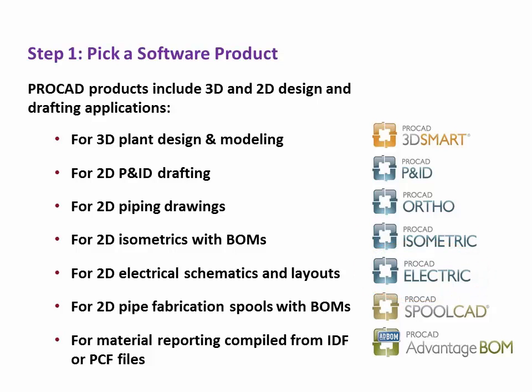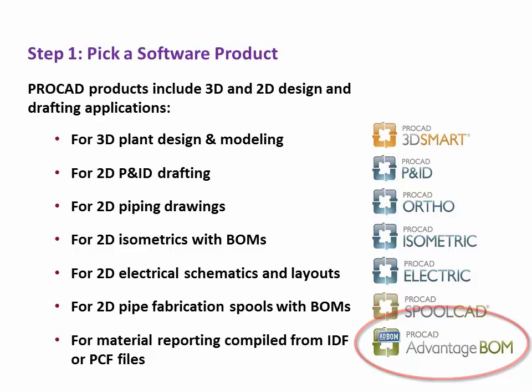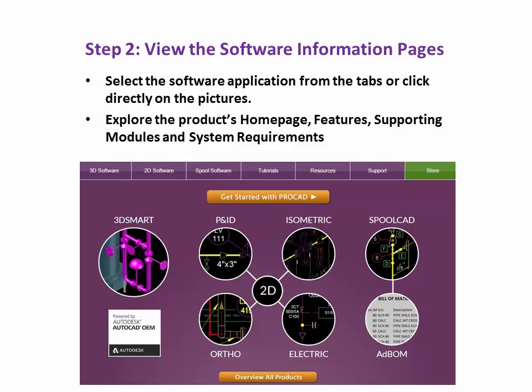For 2D piping fabrication spools with bill of materials, select Spool CAD. For material reporting compiled from IDF or PCF files, select Advantage BOM. Step 2: View the software information pages.